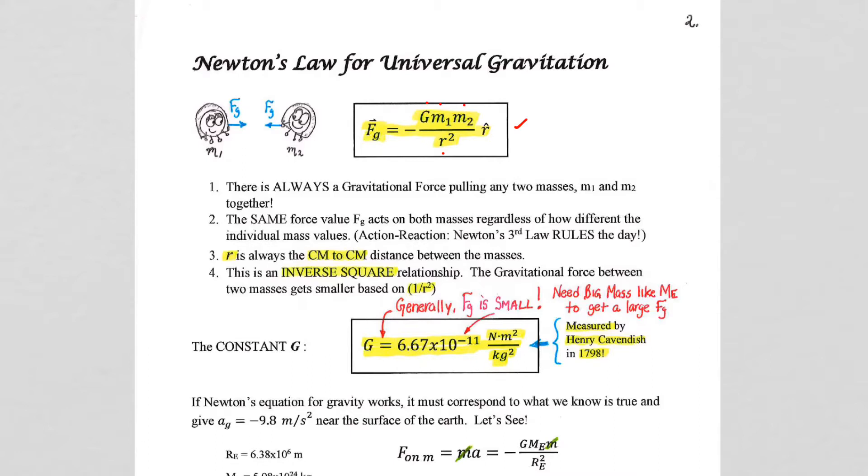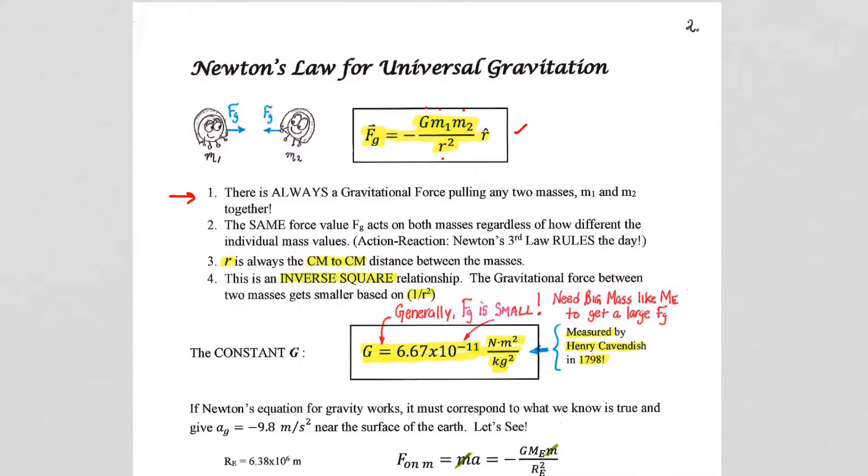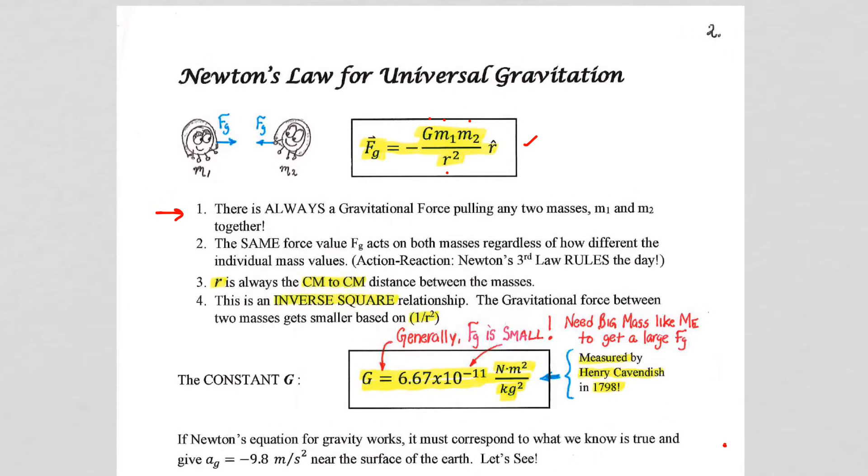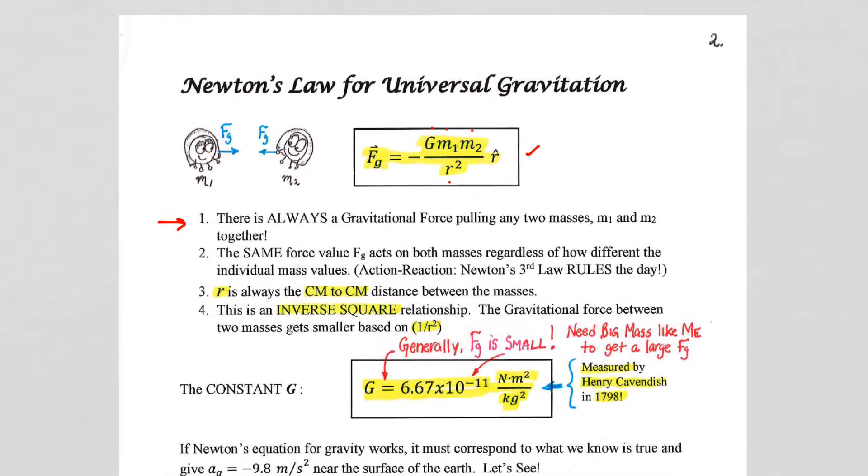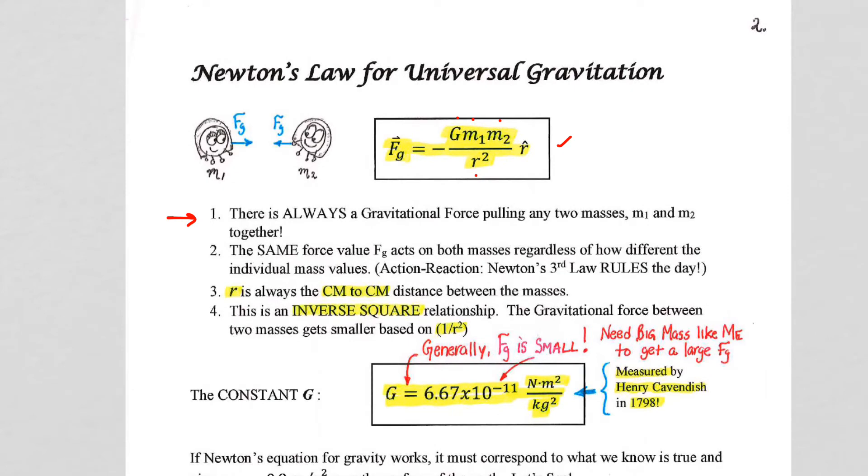The gravitational force, as it says here, is always attractive. It's always pulling the two masses together, so please make sure you add this bit to your notes. The negative out in front here is associated with the r hat.